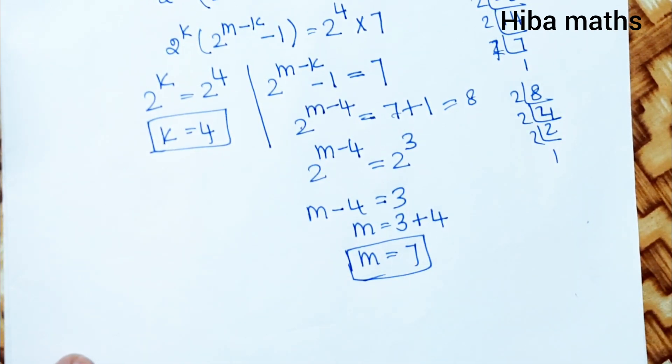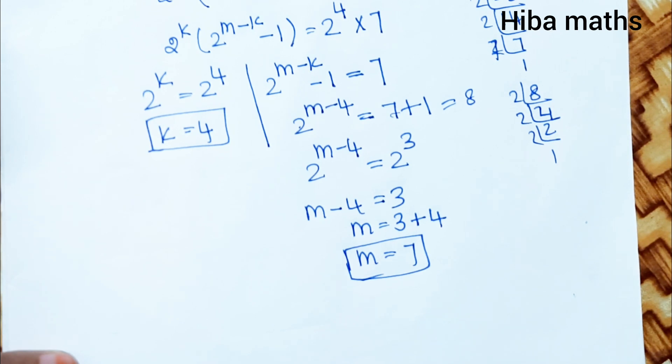So the K value and M value. Can you please understand? If you have any doubt, comment in the comment section. Thank you so much for watching.